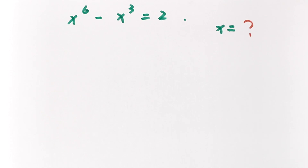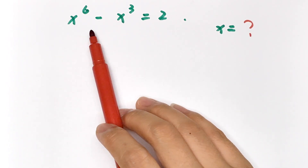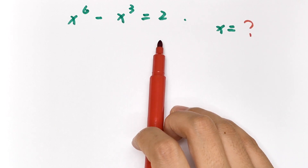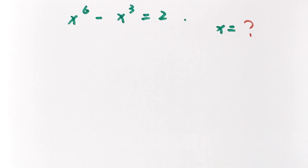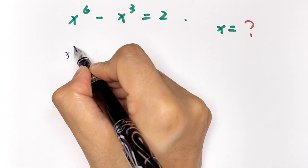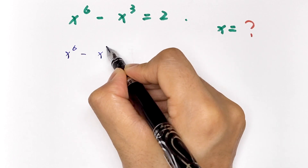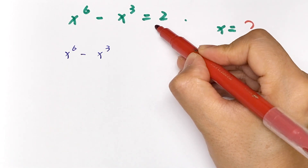Hello, welcome to Math4U. In this video, we will solve x to the power 6 minus x cubed is equal to 2, and find the value of x.